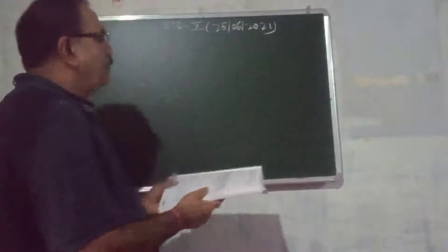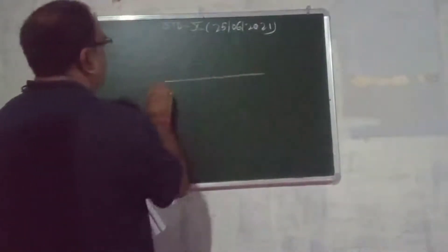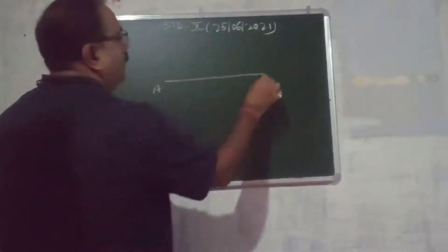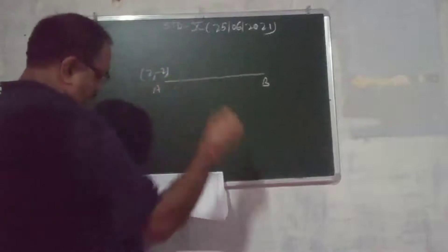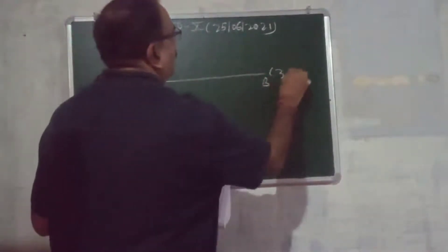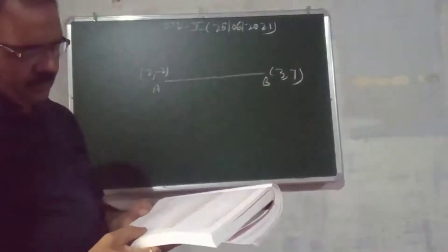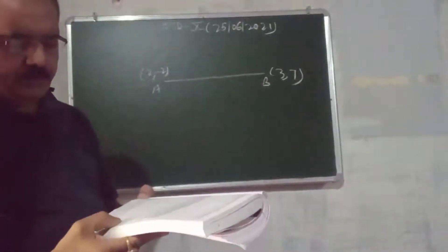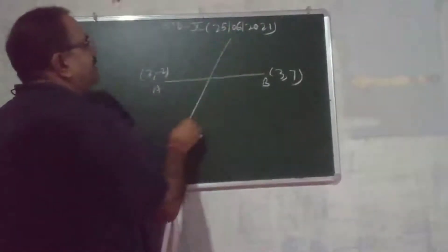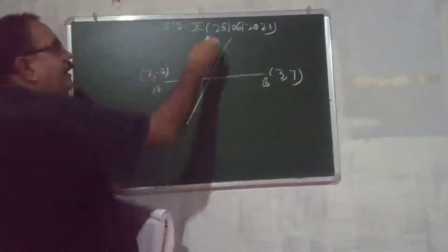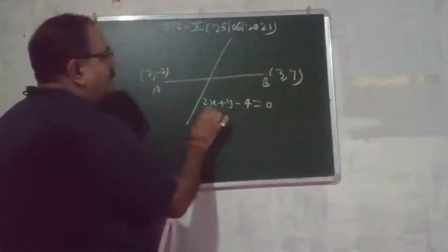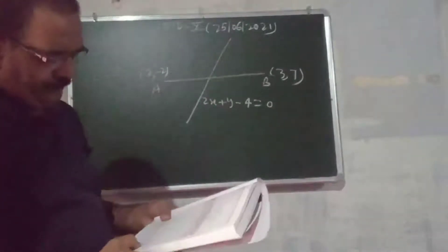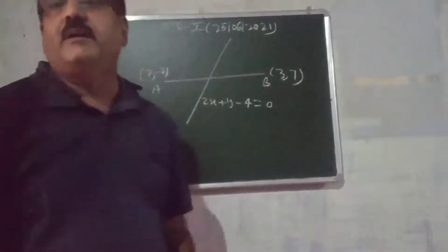One question. Two points are given: A and B. Their coordinates are A(2, -2) and B(3, 7). These are given. We have to determine the ratio in which the line — the equation of the line is given as 2x + y - 4 = 0 — divides the segment AB. This is a straight line. We have to find the ratio.